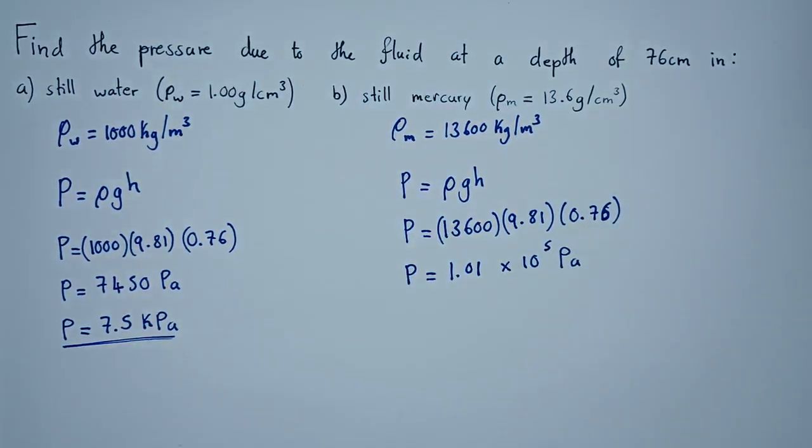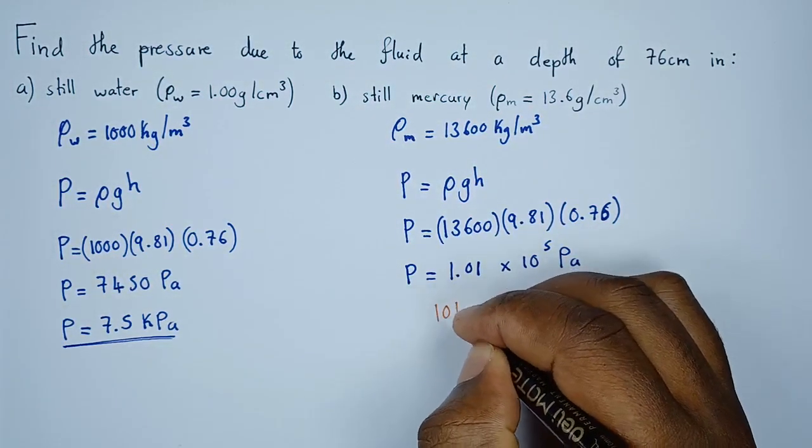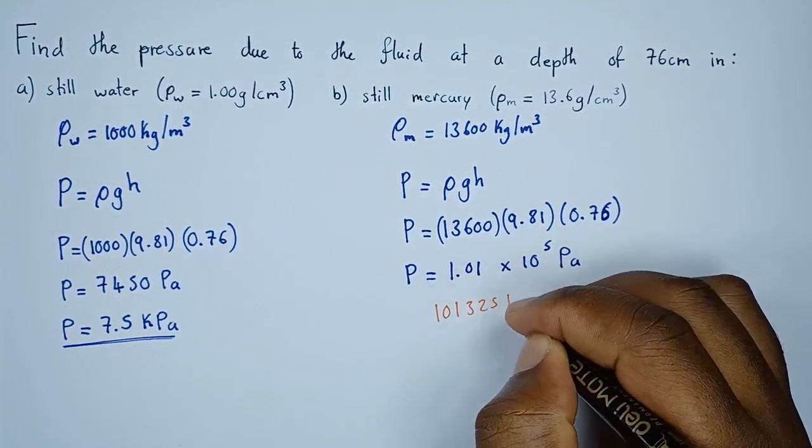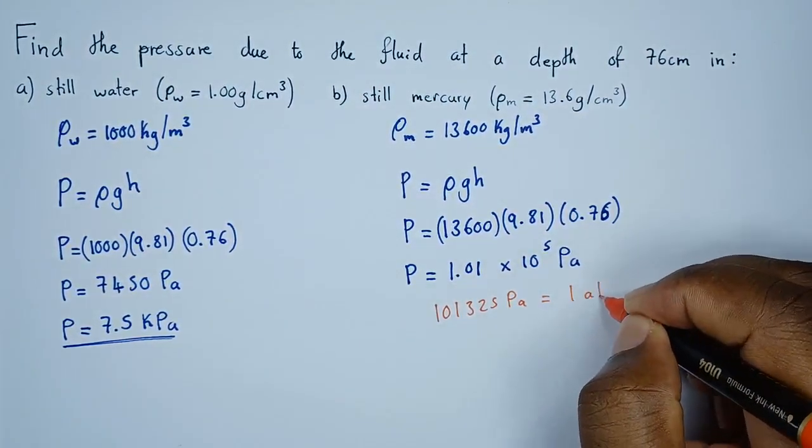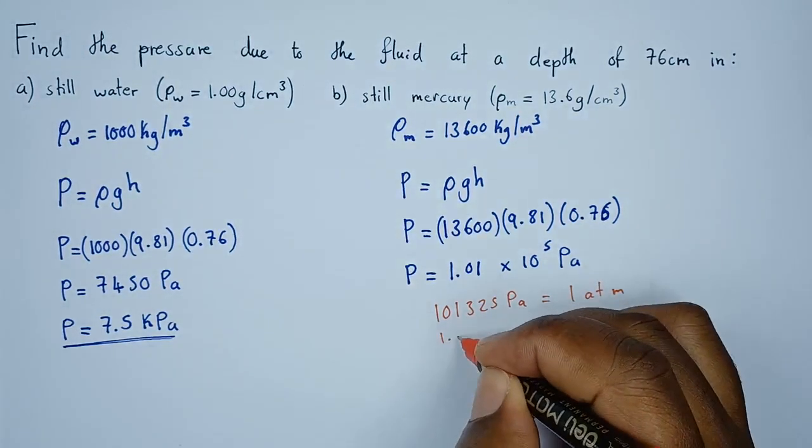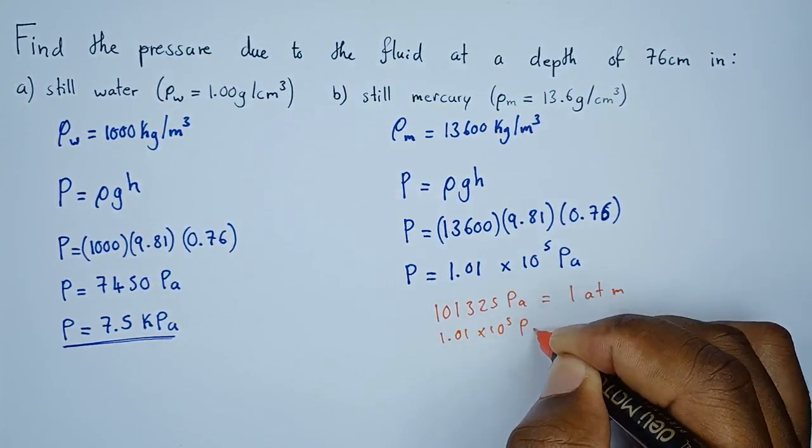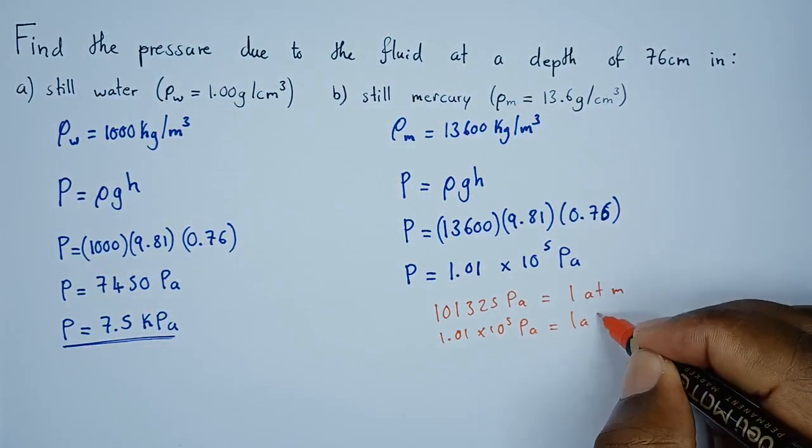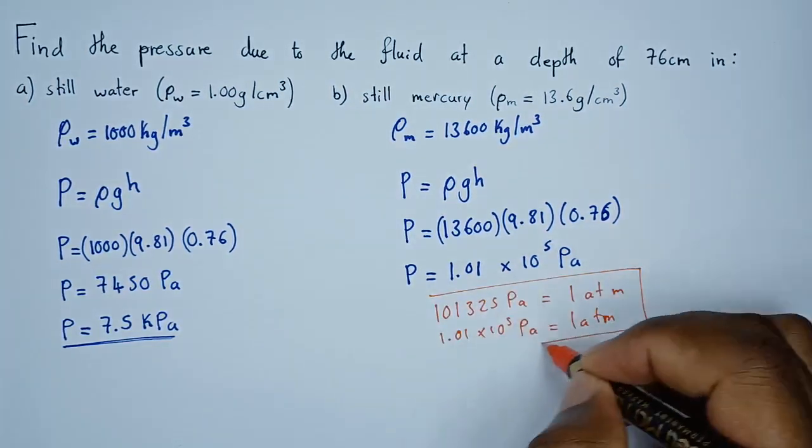Since we know that 10 to the power 5 pascals is equivalent to 1 atm, this value of 1.01 times 10 to the power 5 pascals equals 1 atm or 1 atmospheric pressure.